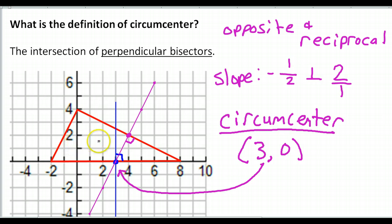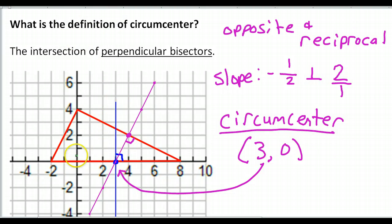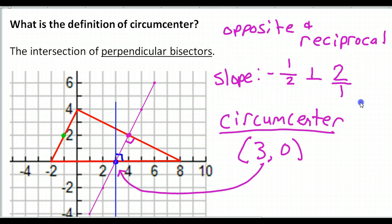Just to be thorough and for extra practice, let's go ahead and see what the other perpendicular bisector would look like. It's just good practice. I'll go ahead and use green this time. Looking at the final side that I haven't used yet, the midpoint of this side would be right here. Let's go back and talk about the slope and everything again.